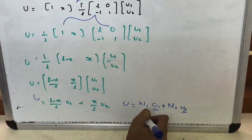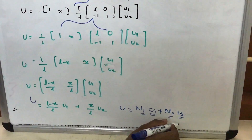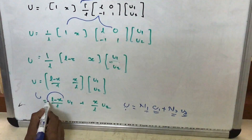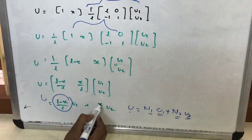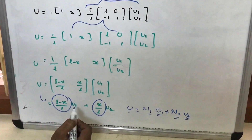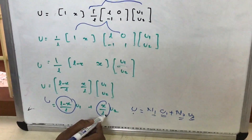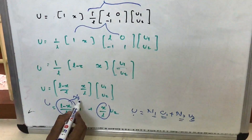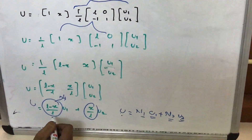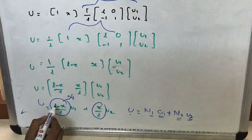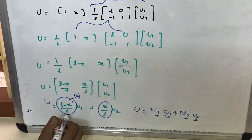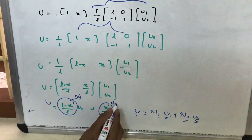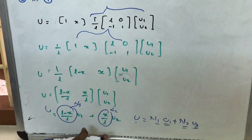N1 is actually the shape function at node 1 and N2 is the shape function at node 2. By comparing the two equations, we can say that shape function N1 = (L - x)/L and shape function N2 = x/L. We can verify this: at node 1 where x = 0, N1 = L/L = 1 (unity), and at the other node where x = L, N1 = 0/L = 0. So N1 satisfies the shape function property.